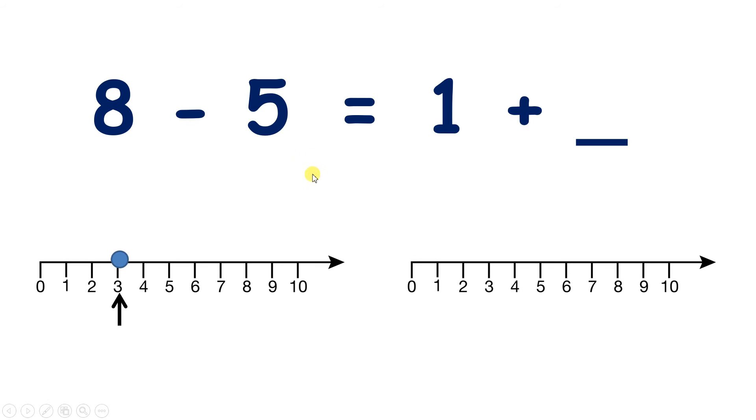Well, if one side of the equal sign is 3, the other side has to be 3 as well. So what I have to do over here is I have to think 1 plus something is 3. So if I'm on 1, how many jumps do I need to make to get to 3? Well, I need 1, 2 jumps, so 1 plus 2 is 3.